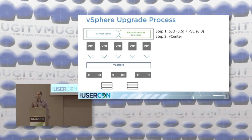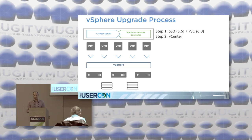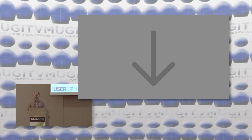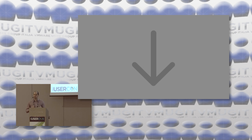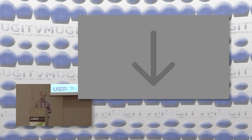Upgrading the vCenter Server is not the end of the entire process. Although you've upgraded the PSC and vCenter Server, you then need to upgrade the hypervisor, VM tools, VMFS, NSX, VRA, or any other products running on top of the vCenter Server. Before the upgrade, check the product compatibility to know which products have to be upgraded as part of the vCenter Server upgrade.